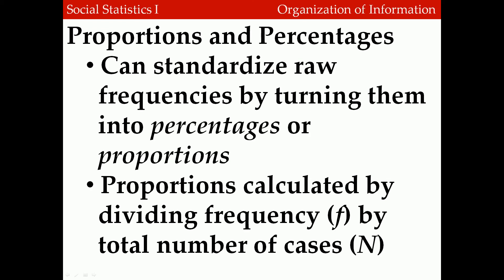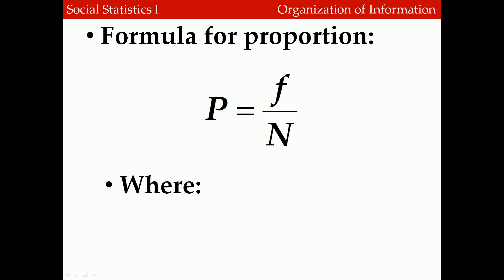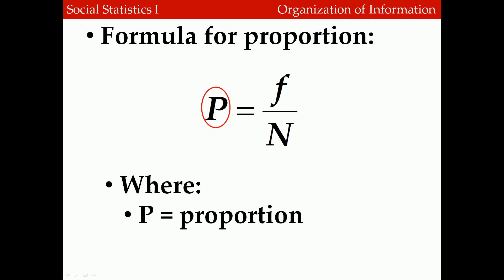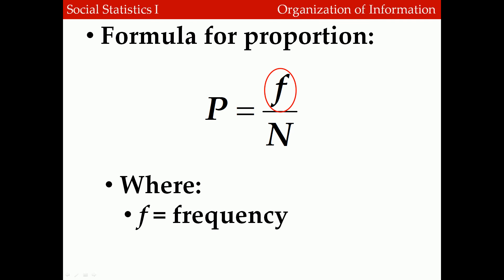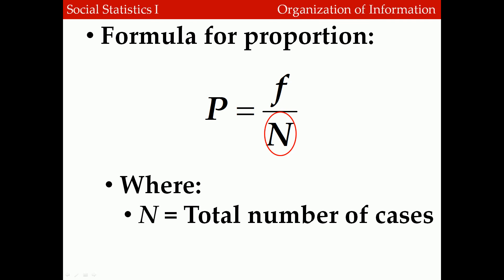Once we've created a frequency distribution, we can easily create proportions and percentages, which are basically a standardized form of a frequency. Frequencies can be turned into proportions by dividing each of them by the total number of cases. Here's the formula for a proportion: p equals the frequency f divided by n, the total number of cases. N is a common convention in statistics and is usually used to refer to the total number of cases, so you'll see this often.